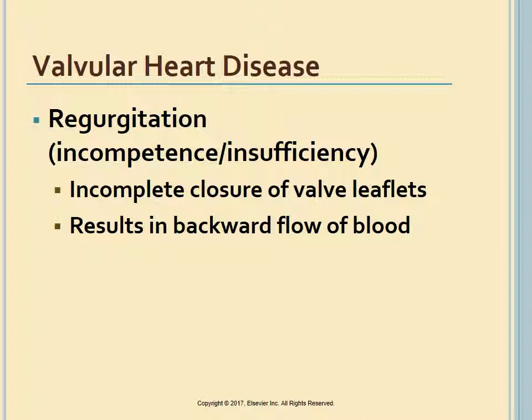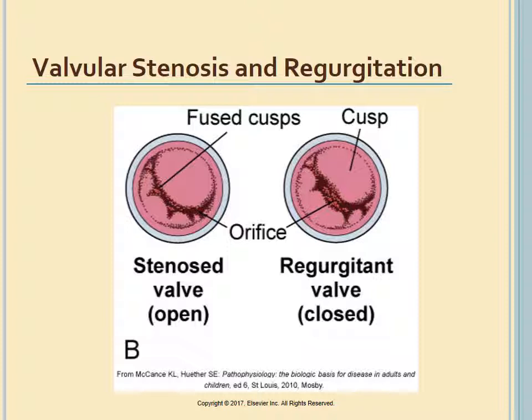When regurgitation occurs, often referred to as incompetence or insufficiency, closure of the valve is incomplete, resulting in a backward flow of blood. This figure shows valvular stenosis and regurgitation: the open position of the stenosed valve on the left, and the closed regurgitant valve on the right.